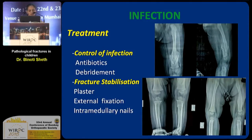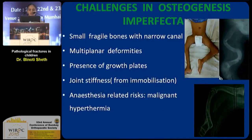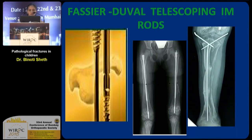Fracture stabilization can be achieved with plaster, or sometimes with an external fixator or intramedullary nail. Many general conditions that weaken the bone are seen in children, like osteogenesis imperfecta, osteopetrosis, and pycnodysostosis. Osteogenesis imperfecta is really challenging because we have small, fragile bones with very narrow canal, many times multiplanar deformities, presence of growth plates which we have to avoid while fixing them. Adjacent joints may be stiff because of repeated immobilization and there are anesthesia-related risks like malignant hypothermia. We have special implants like the Fassier-Duval telescoping intramedullary rod, where male and female rods expand as the child grows, but sometimes in mature children or with very narrow canal, we can use simple nails or K-wires.